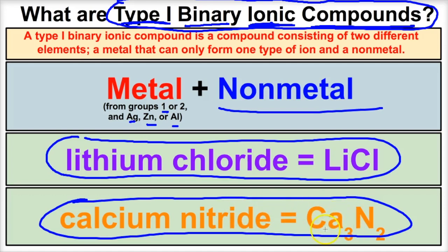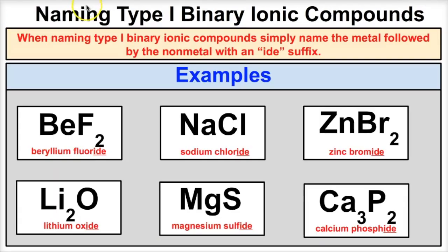In this video, we're going to learn how to name type 1 binary ionic compounds, and we're going to learn how to write the chemical formulas for them. So let's jump right in. What if you're given the chemical formulas for a type 1 binary ionic compound? How can we tell that all of these chemical formulas represent type 1 binary ionic compounds?